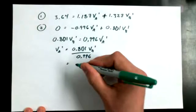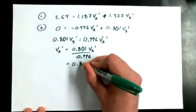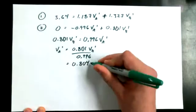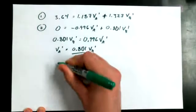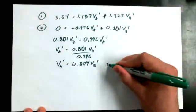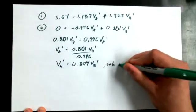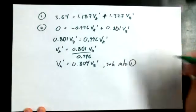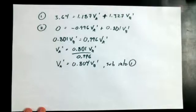0.804. 0.801 over 0.996 equals 0.804 VB-primed. And I could say sub into equation 1. Now we don't have any answers yet, but we're about to get some answers.